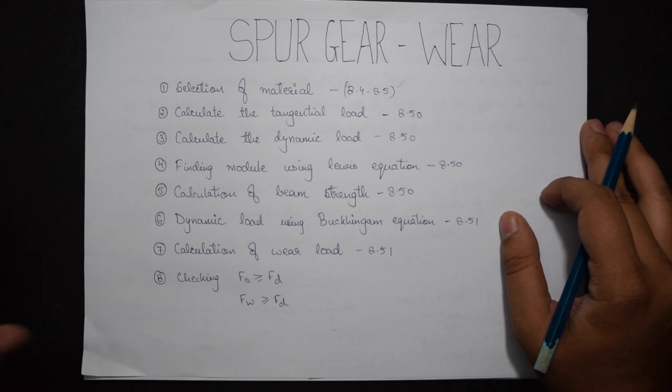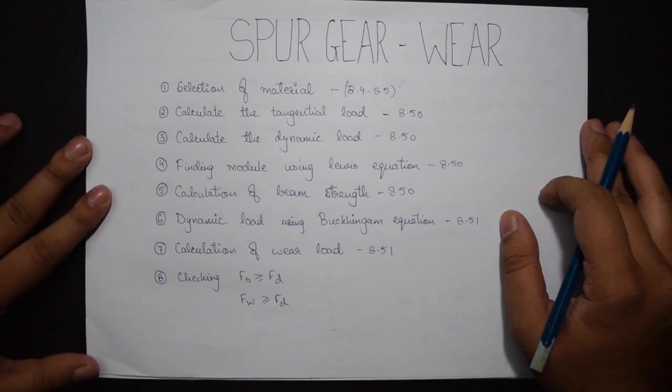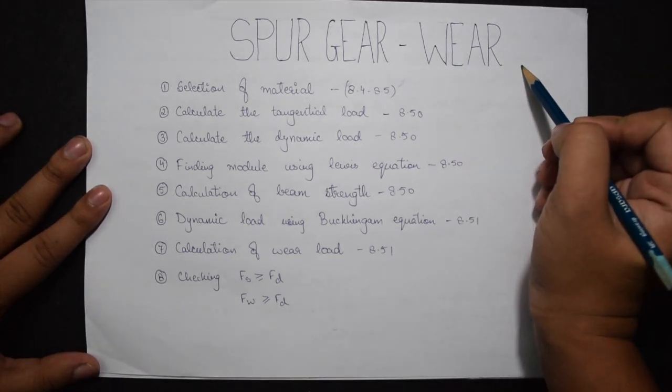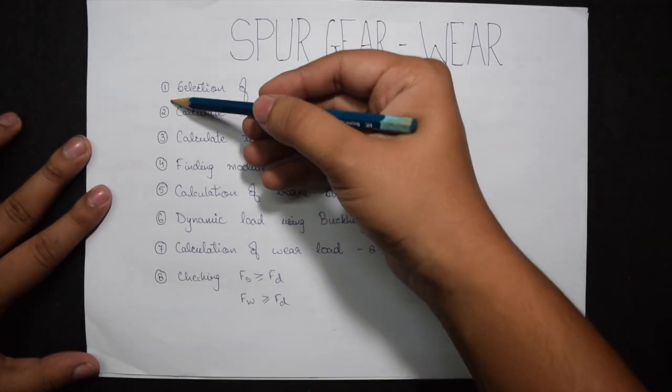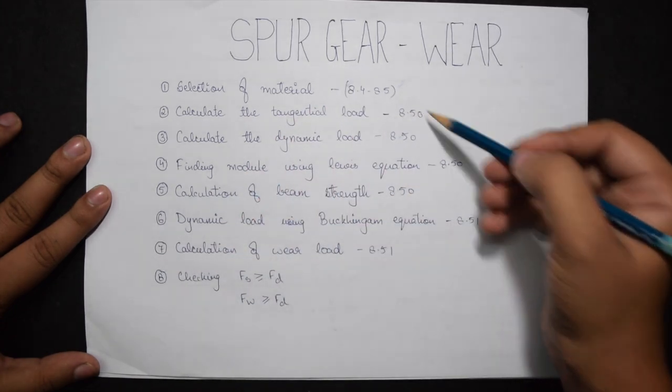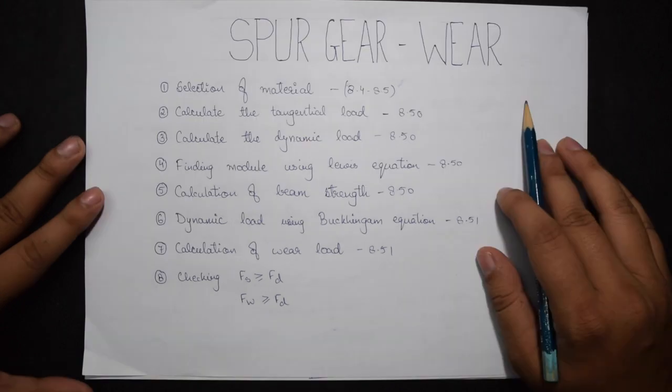Hello guys, today RoboMetrix will design a spur gear based on wear conditions. The steps are only 8 and most of the formulas are given on page number 8.50 or 8.51 of the design data book.